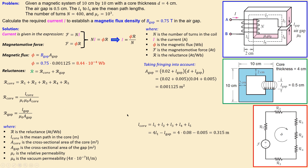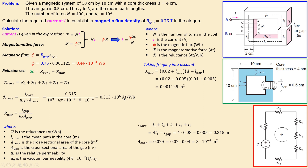The core cross-sectional area A_core = 0.02 × 0.04 = 8 × 10⁻⁴ m². Substituting into the reluctance formula gives R_core. Similarly, using the known gap area and gap length, we calculate R_gap. We now have both reluctance values.